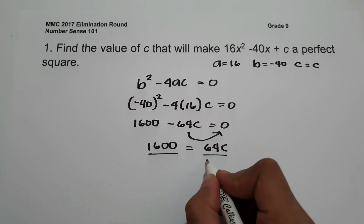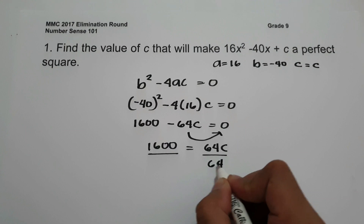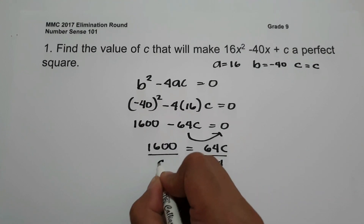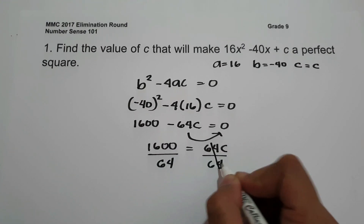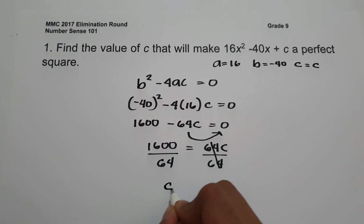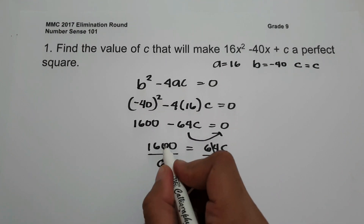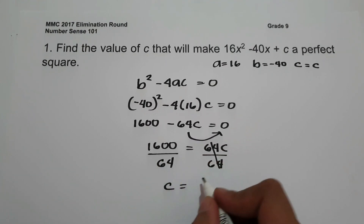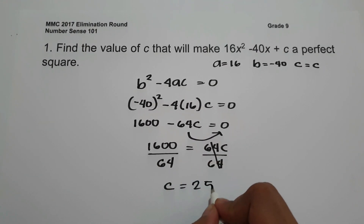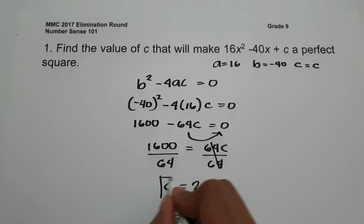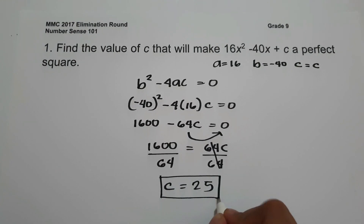To find the value of C, let us divide the whole equation by 64. So 1600 divided by 64 is 25. So C equals 25 will be our answer.